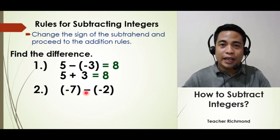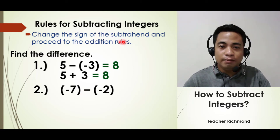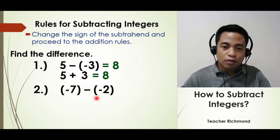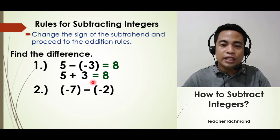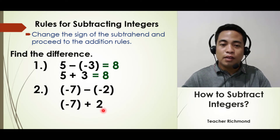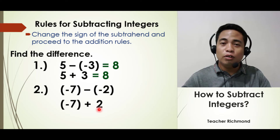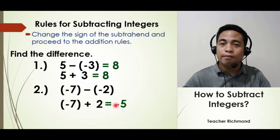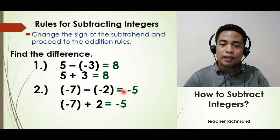Let's proceed to the next example: negative 7 minus negative 2. We use the same rule — change the sign of the subtrahend and proceed to addition. The subtrahend is negative 2, so change it to positive. It becomes negative 7 plus positive 2. Get the difference of 7 and 2, which is 5, and copy the sign of the integer with the greater value. That is 7, which is negative. Therefore the answer for negative 7 minus negative 2 is negative 5.